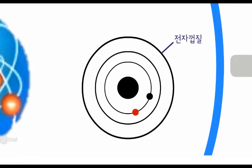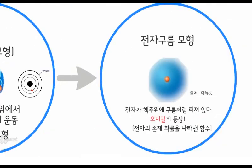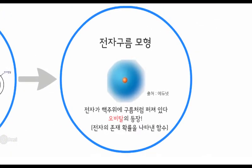하지만 전자가 하나 더 있는 원자를 관찰했을 때 이 전자들이 서로에게 영향을 주어서 하나의 궤도 안에 존재하지 않게 되었습니다. 그리하여 새로운 원자 모형인 전자구름 모형을 만들게 됩니다. 이제 전자는 궤도에 갇혀있는 것이 아니라 움직일 수 있게 되었으므로 특정 위치에서 전자의 존재 확률을 나타내게 되는 함수인 오비탈로서 전자의 위치를 정의하게 됩니다.